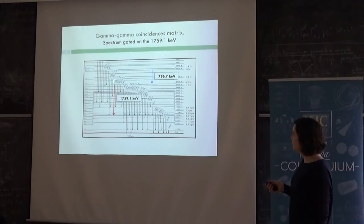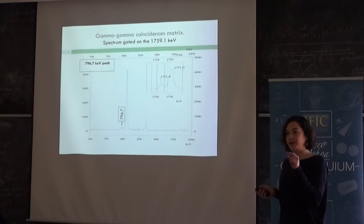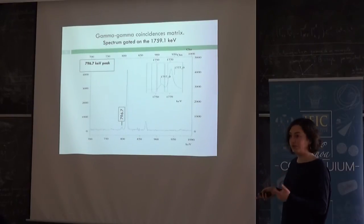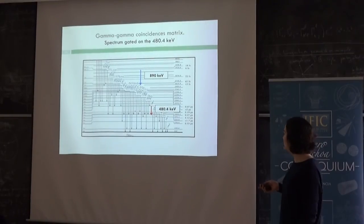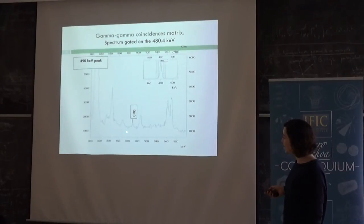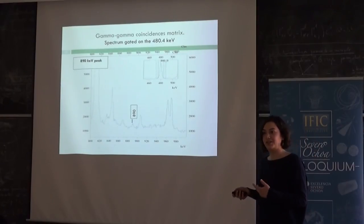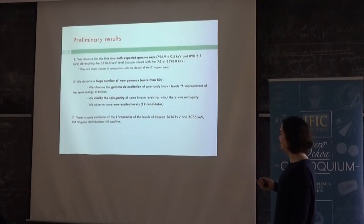This would be, again, for example, we put here a gate and we are looking for this new gamma. Here is the gate we are using and then you see the gamma. They are really tiny peaks, but they are clean. So you can see this would be like a new gamma. And here, the same for the other new gamma that we were looking for. If you put the gate here, you are looking for that gamma. So here is the gate we used and you also see here, it's not like, there are not so much, there is not so much statistics, but it's a clean peak.